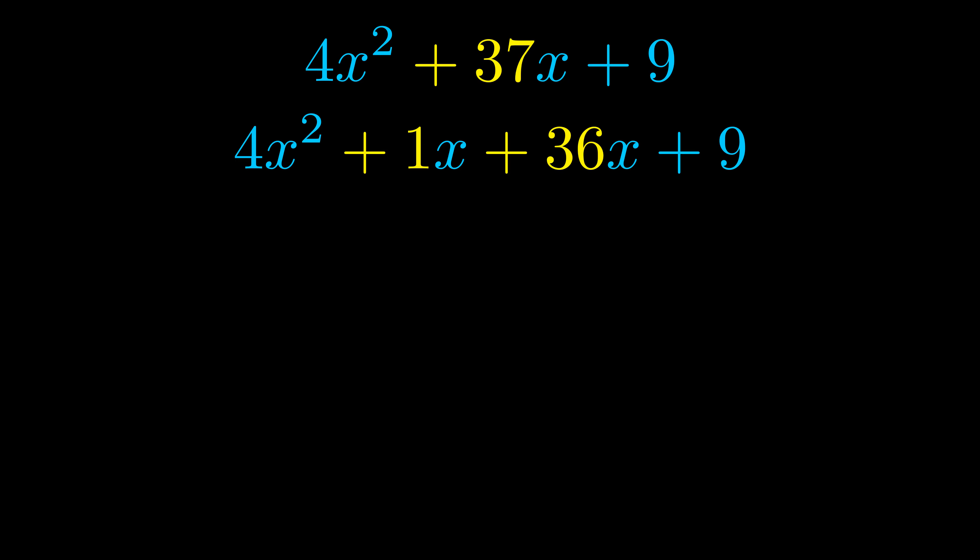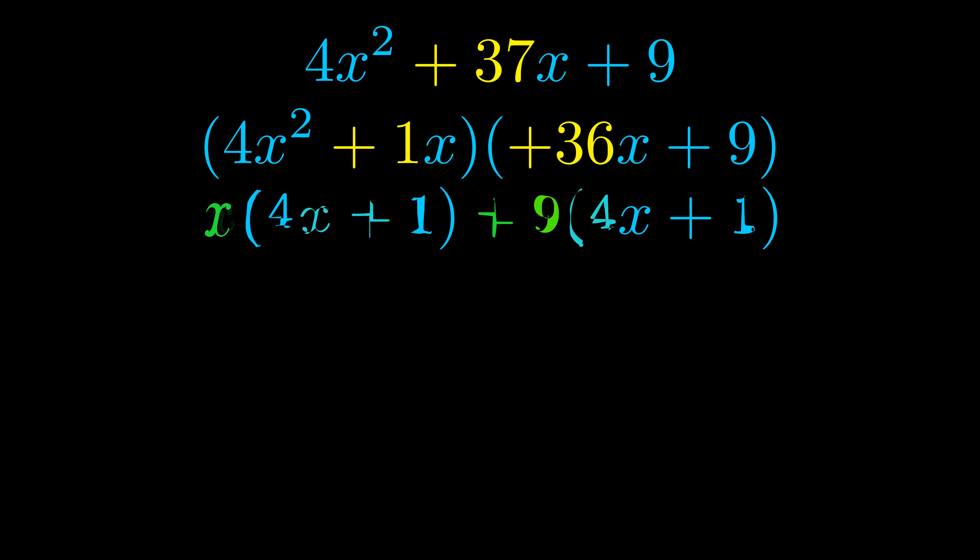Once we've done this we go ahead and we put parentheses around the first term and the last term, and we do that so that we can take the greatest common factor out of both terms. We can see the greatest common factor is now outside in green. Notice also how what remains inside of the parentheses is the same in both cases. The blue values are the same.